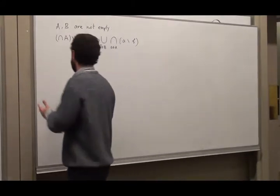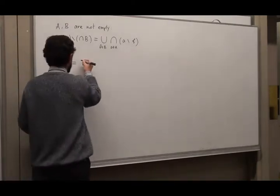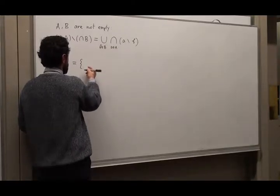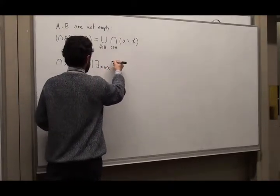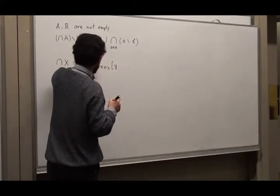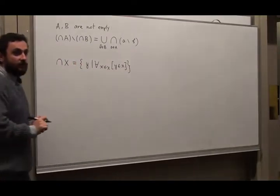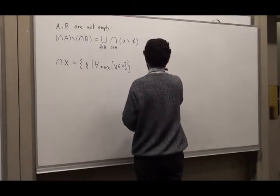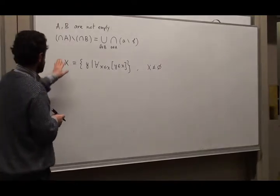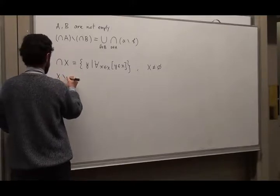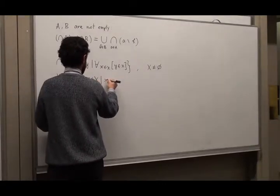What do we need to know to understand this equality? We need to know what it means to have an intersection of X — that is the set of all y's such that for every x in X, y is in x. This definition only works when X is not empty. Another concept we need is the difference of two sets: X minus Y is the set of all x's in X such that x is not an element of Y.